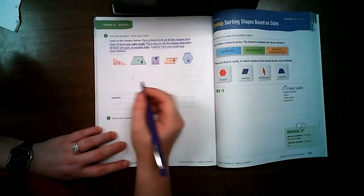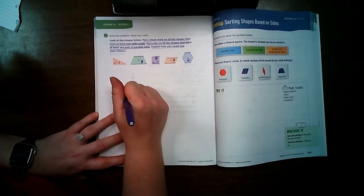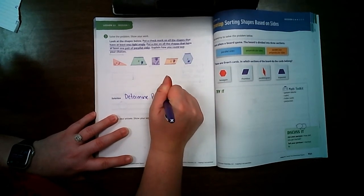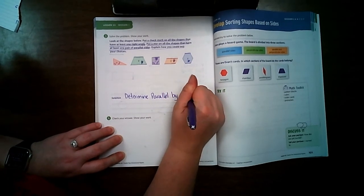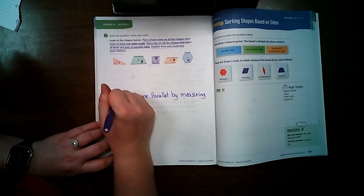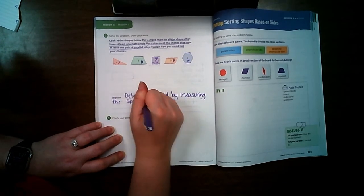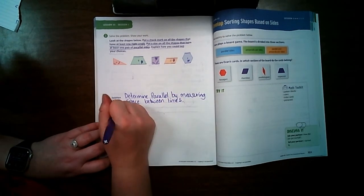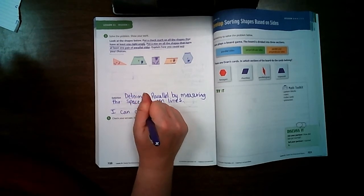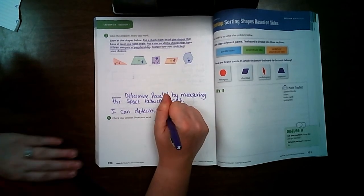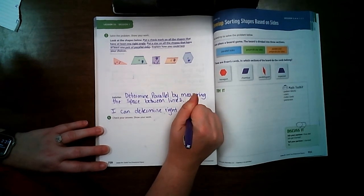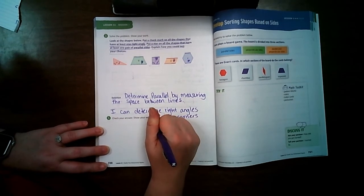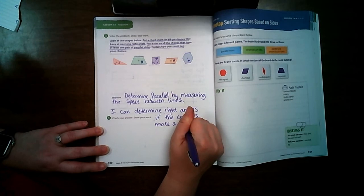Explain how you could test your choices. So, I can determine parallel by measuring the space between lines. I can determine right angles if the corners make a square.